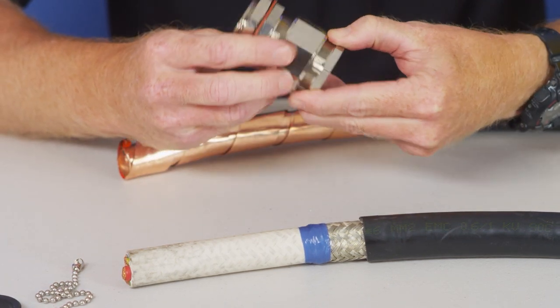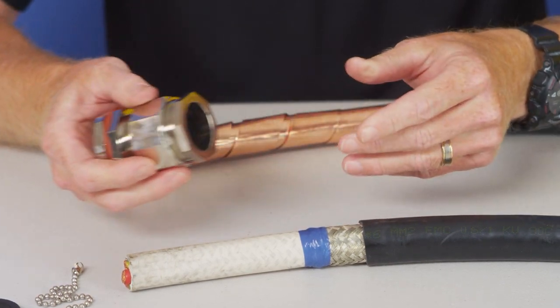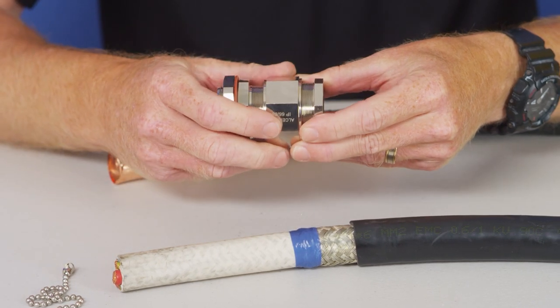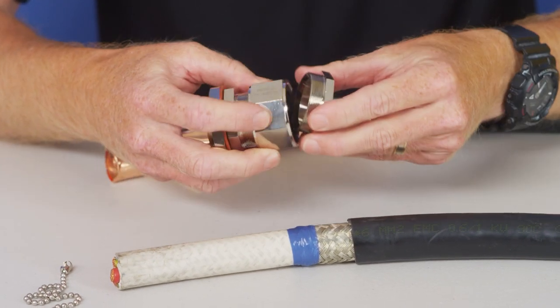In this case it's an ALC EMC 40 and what we'll do there, we'll pull out the incorrect seal and we'll toss that aside. We don't have to use that.